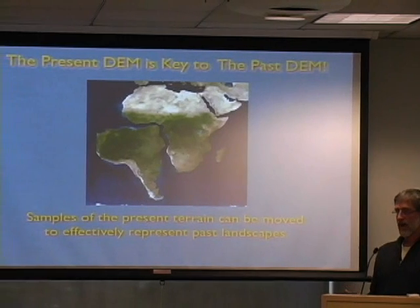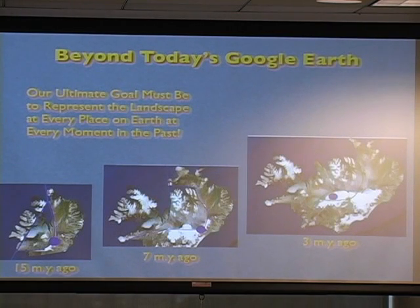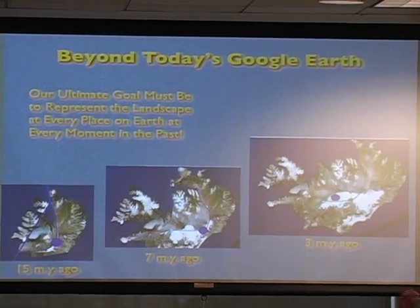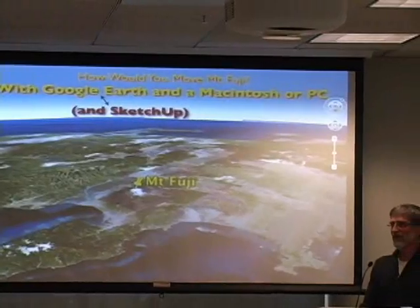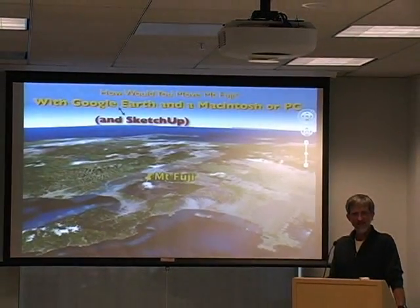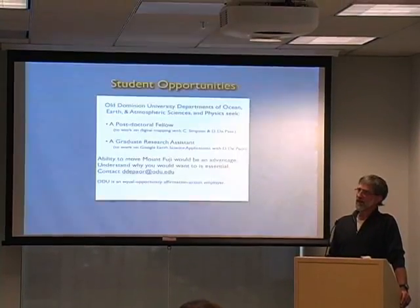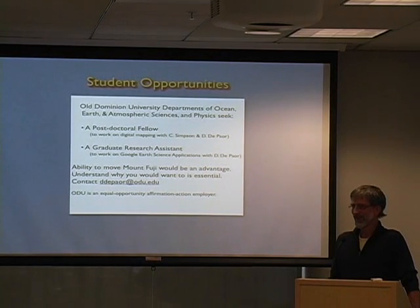We can use samples of the present terrain and move them around to effectively represent past landscapes. The ultimate goal beyond today's Google Earth is to represent the landscape at every place on Earth, at every moment in the past. For example, we can see Iceland on today's Google Earth - we'd like to see it 3 million years ago, 7 million years ago, 15 million years ago - and be able to go there, fly around, helicopter around it just as we can with today's landscape. So if you answered the question 'how would you move Mount Fuji' by saying 'with Google Earth and a Macintosh or a PC, and certainly with SketchUp,' you might not get yourself a job at Microsoft. But you might get yourself a job as a research scientist at Old Dominion working with me and trying to change Google Earth. Thanks very much.